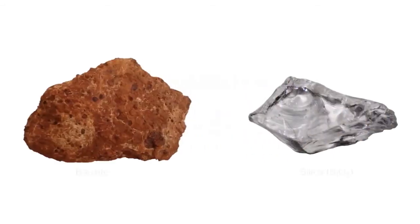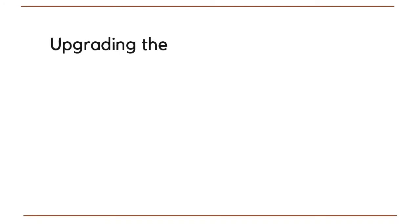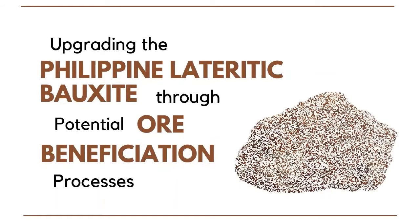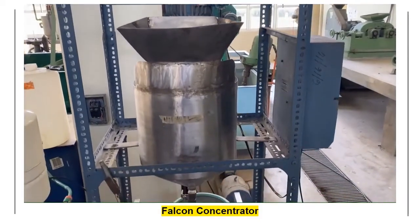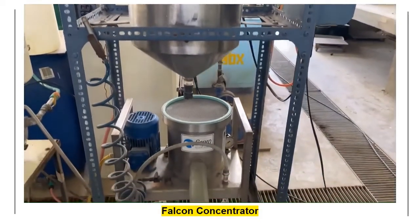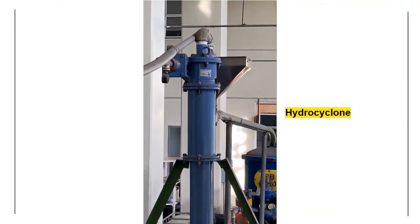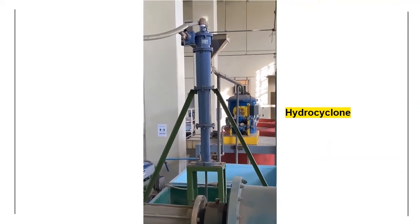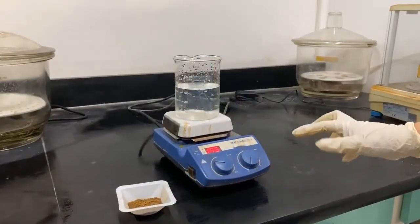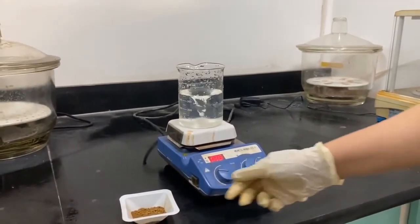For us to be able to make use of these waste deposits, it is necessary to upgrade the deposit and remove its detrimental constituents. This project, funded through the DOST Cradle Program, aims to upgrade the Philippine laterite bauxite through potential ore-beneficiation processes. Several gravity concentration and classification techniques will be tested to find the optimal process that will remove detrimental minerals, producing a bauxite ore with acceptable silica values for the subsequent hydrometallurgy process.